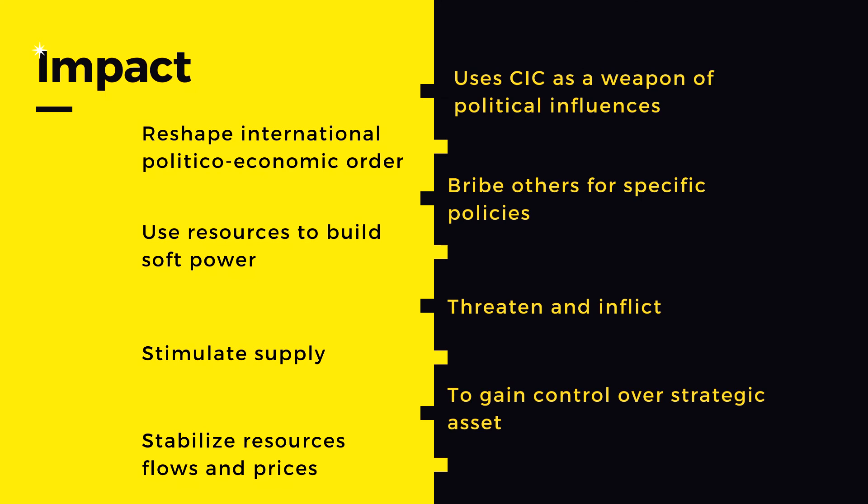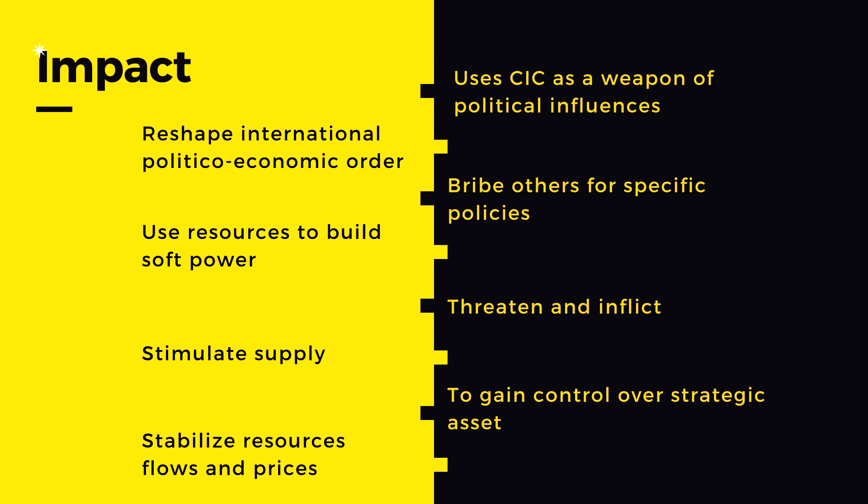Next, we discuss the impact of China using CIC as a tool of political influence. First, to bribe others by providing money in exchange for specific policies favorable to China, such as with Taiwan. Second, to threaten and inflict pain on countries that China views as enemies or that have adopted hostile policies. Third, China could use CIC reserves to gain control over strategic assets, industries, and technologies. Fourth, China could deploy its financial power to reshape the international political economy order. Fifth, China could use CIC resources to enhance its soft power. Sixth, China could use CIC to stimulate its supply chain and stabilize its resource flow and prices.